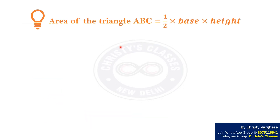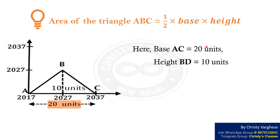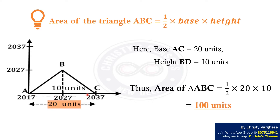We know that area of a triangle equals half its base into height. Here, base AC equals 20 units and height BD equals 10 units. Therefore, area of triangle ABC equals half of 20 into 10, which equals 100 square units.